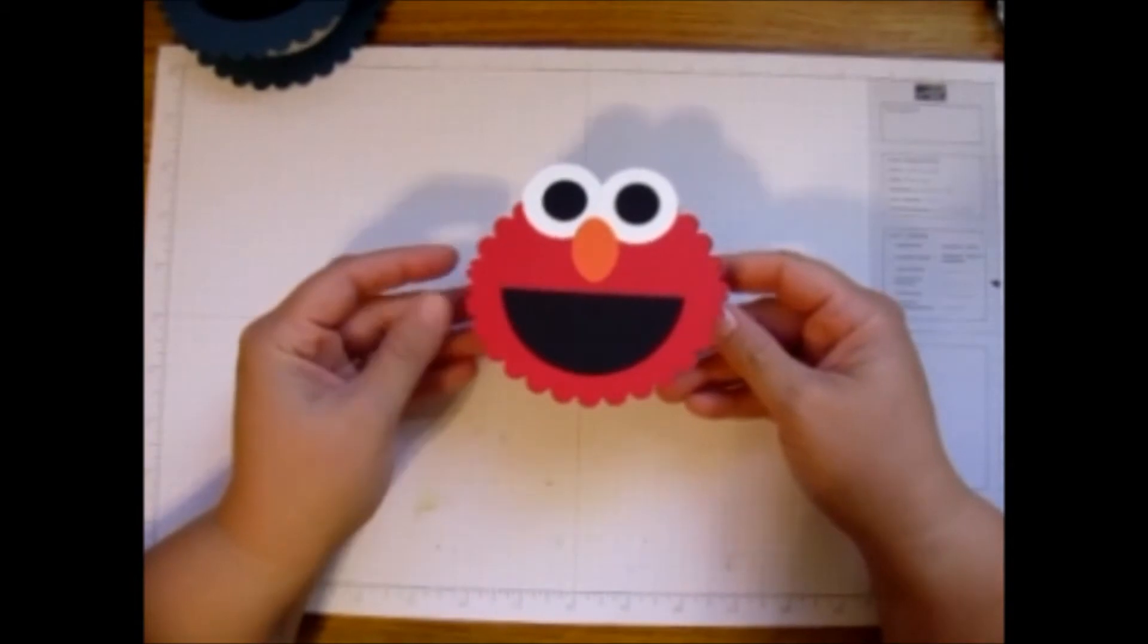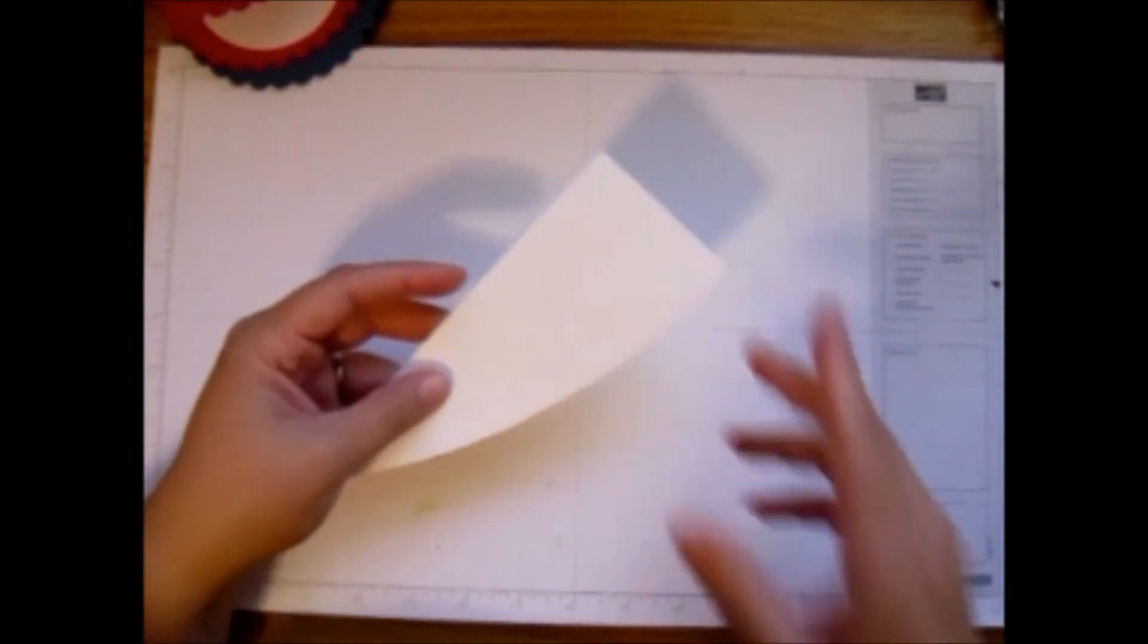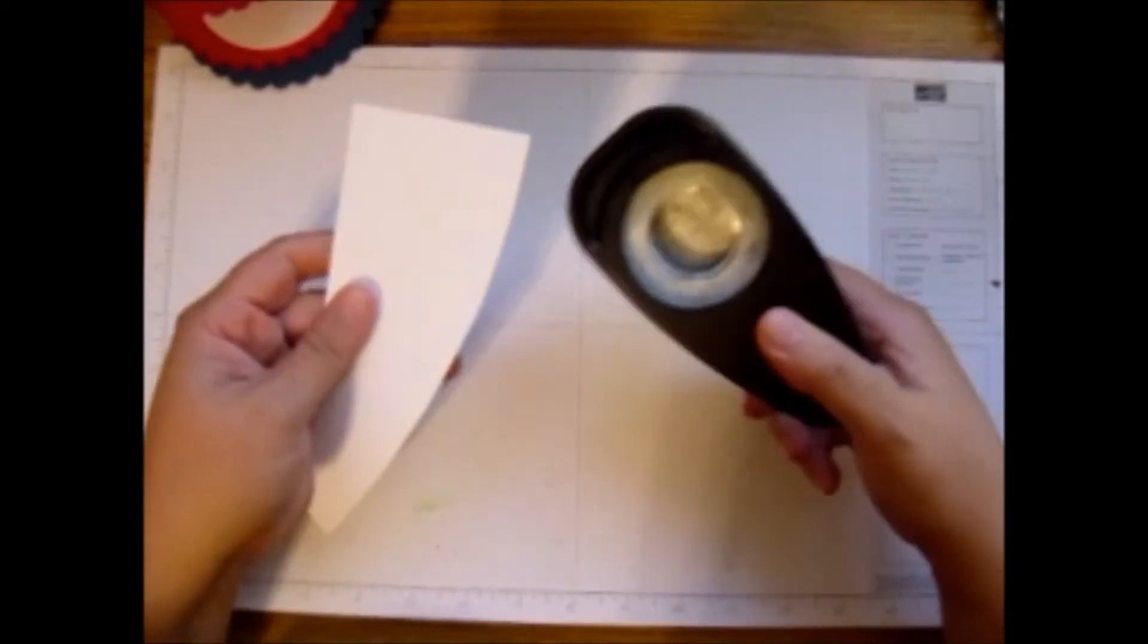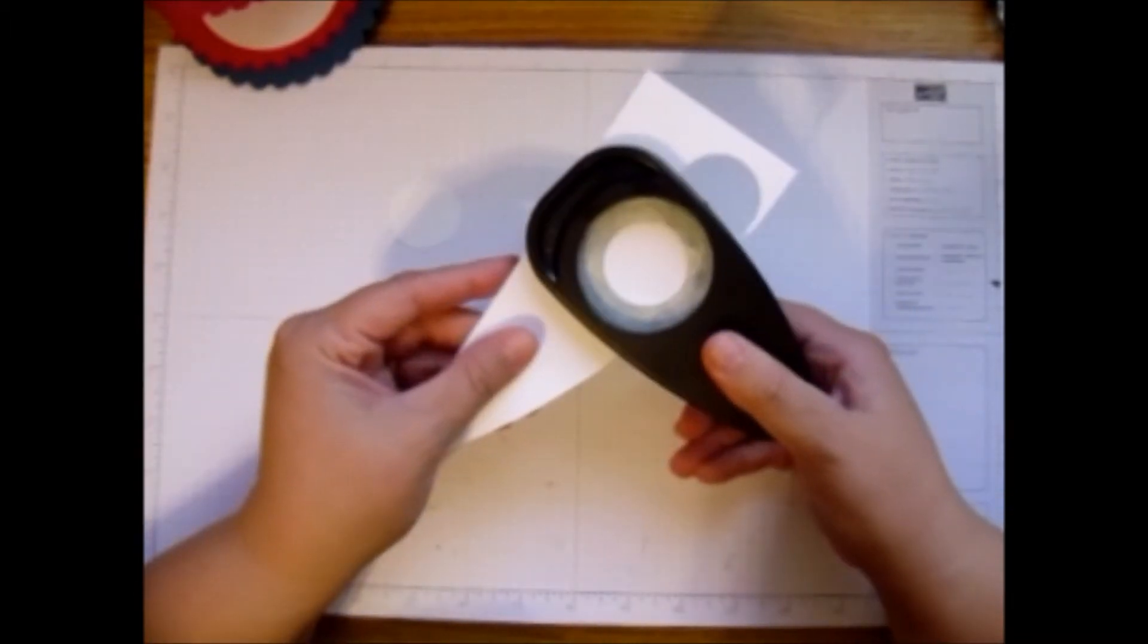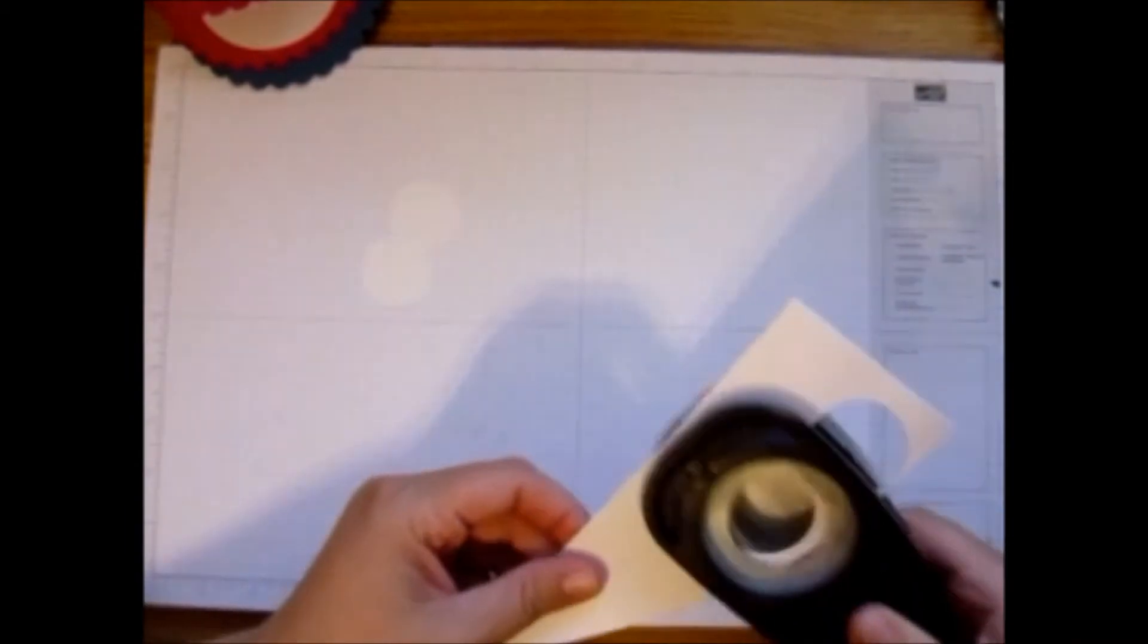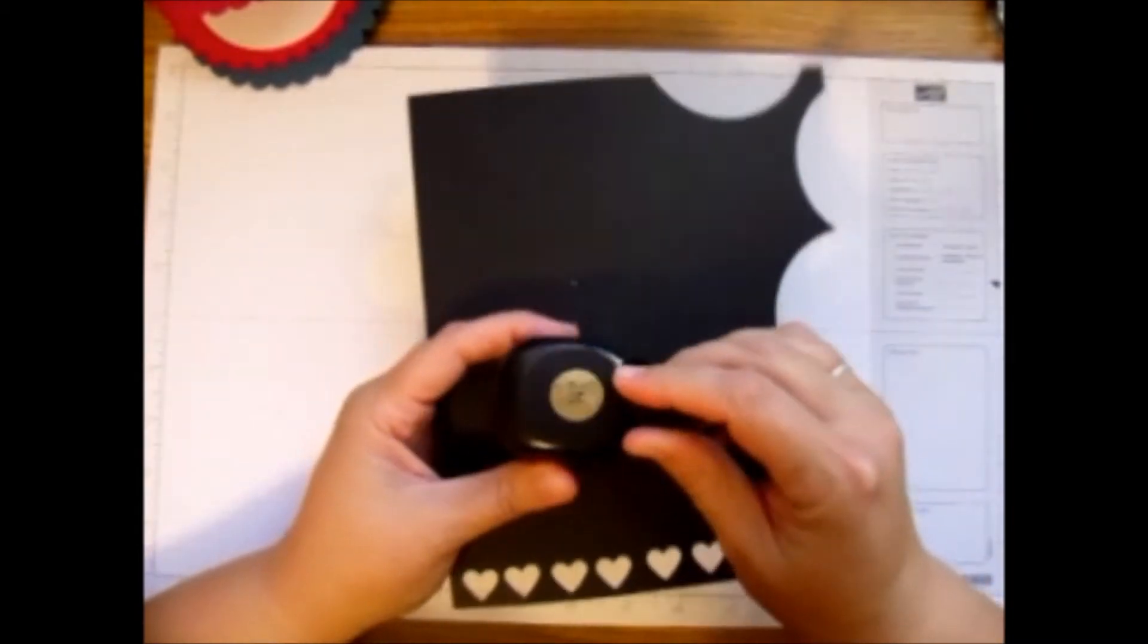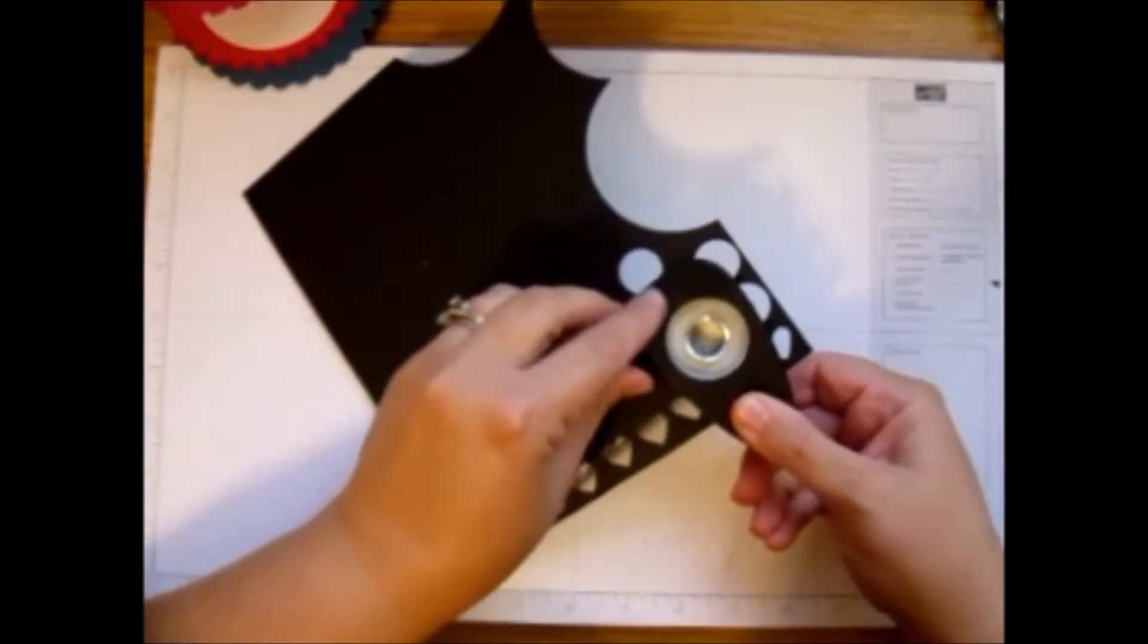And we'll do this little guy today. So very easy. All I'm going to do is take my whisper white cardstock and my 1 3/8 inch punch and punch out two whisper whites. Then I'm going to take my basic black cardstock and my 3/4 inch punch and punch out two of those.